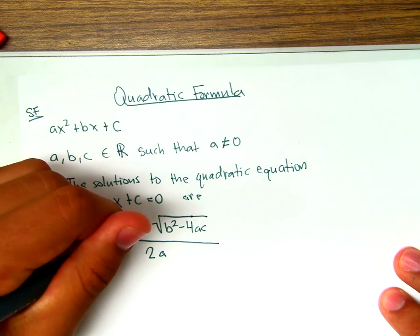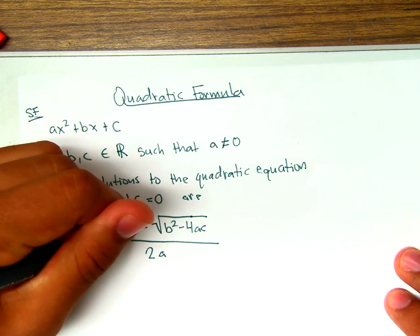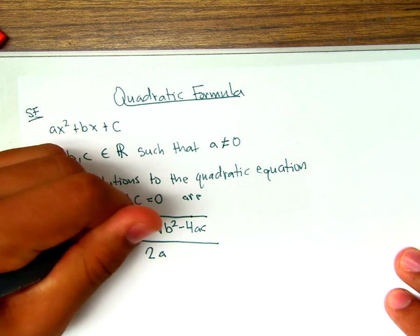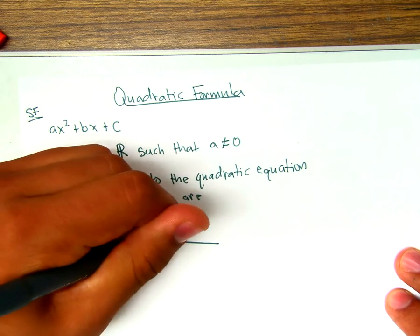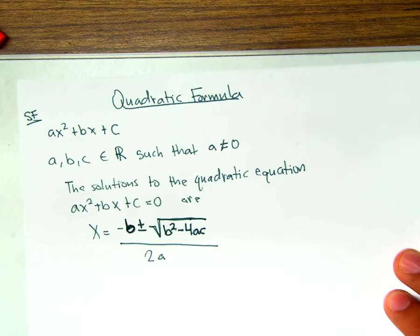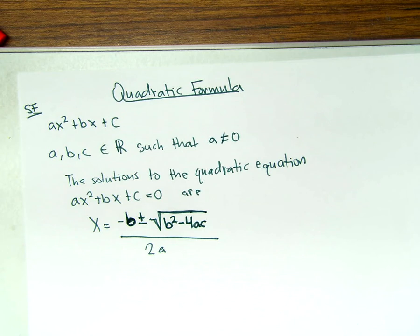This here is negative b, but the easier way to refer to it is 'opposite b.' So whatever b is, we'll take the opposite of that number. And the way to remember this formula — there's a little song, kind of like Pop Goes the Weasel. It's like: x equals opposite b plus or minus the square root of b squared minus 4ac, all over 2a.